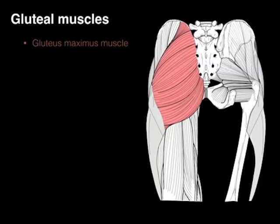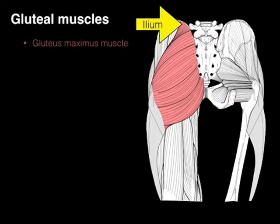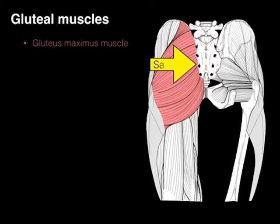There we have our gluteus maximus. Gluteal means rump, and this is the region where these gluteal muscles are primarily located. The gluteus maximus is the biggest, and it arises from the ilium as well as the sacrum.